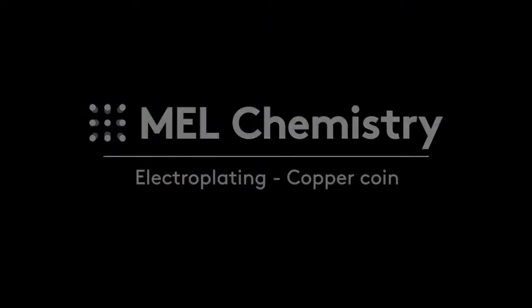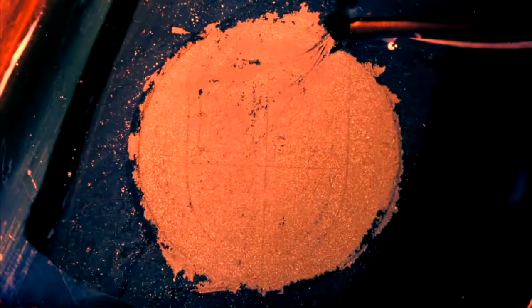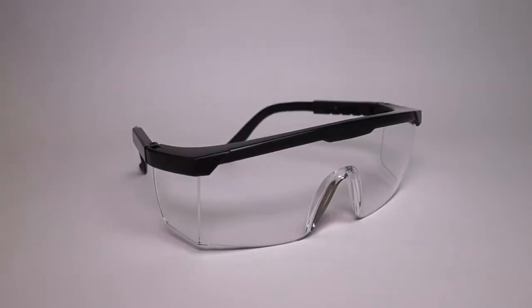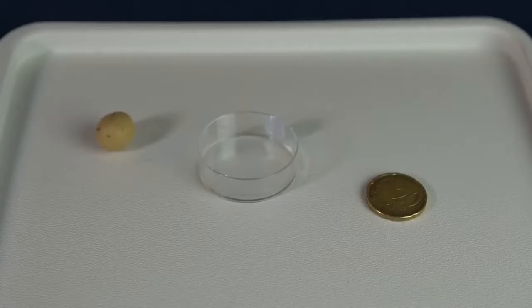Today, with the help of MelScience Electroplating Set, we will make copper coins by ourselves. For this experiment, take a small Petri dish and flatten a Play-Doh on it.